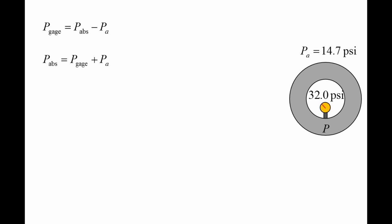Rearranging the formula and plugging in 32 psi for P gauge and 14.7 psi for P ambient, the absolute pressure in the tire is 46.7 psi.